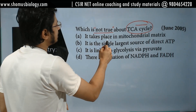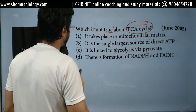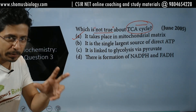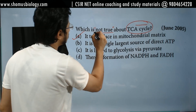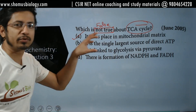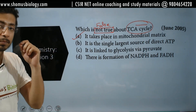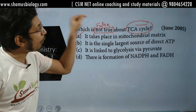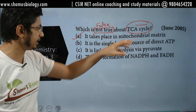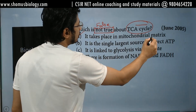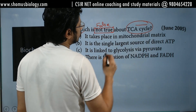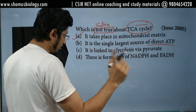The best way to answer a 'not true' question is to replace 'not true' with 'false.' Always do this — it is a trick that helps you solve the question much faster. Read it as: 'which among the statements is false about the TCA cycle?' Option A: it takes place in the mitochondrial matrix — false or true? It is true, so not false. Option B: it is the single largest source of direct ATP — that is also true, not false.